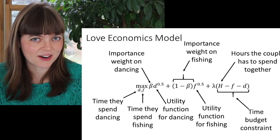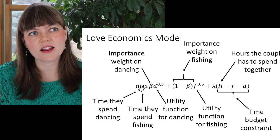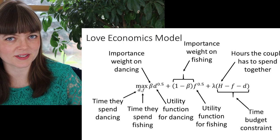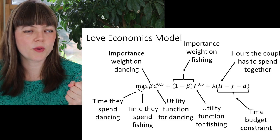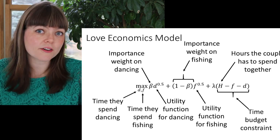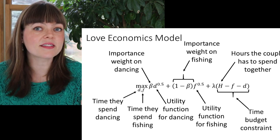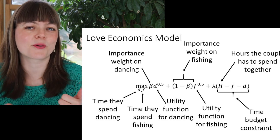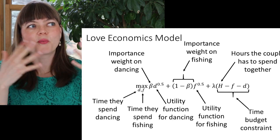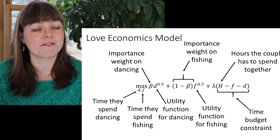Now what's the paradox here? The paradox is: imagine that all you cared about was the other person's utility. If that's the case, you're going to put a 100% importance weight on the thing that they love, and a 0% importance weight on the thing that you love. So would that be the most loving possible person available?